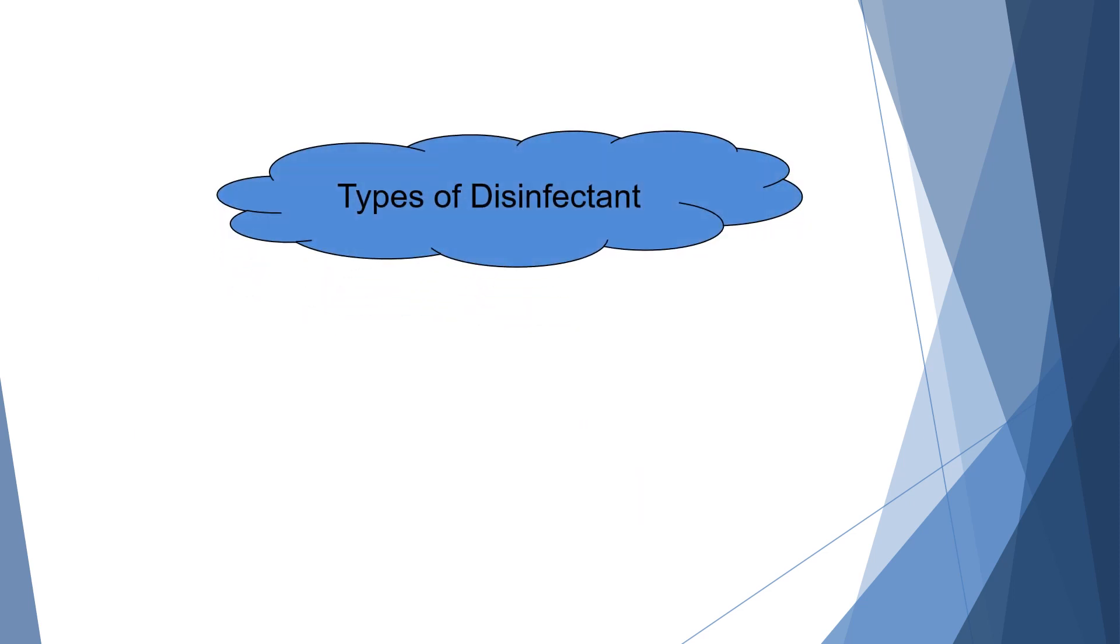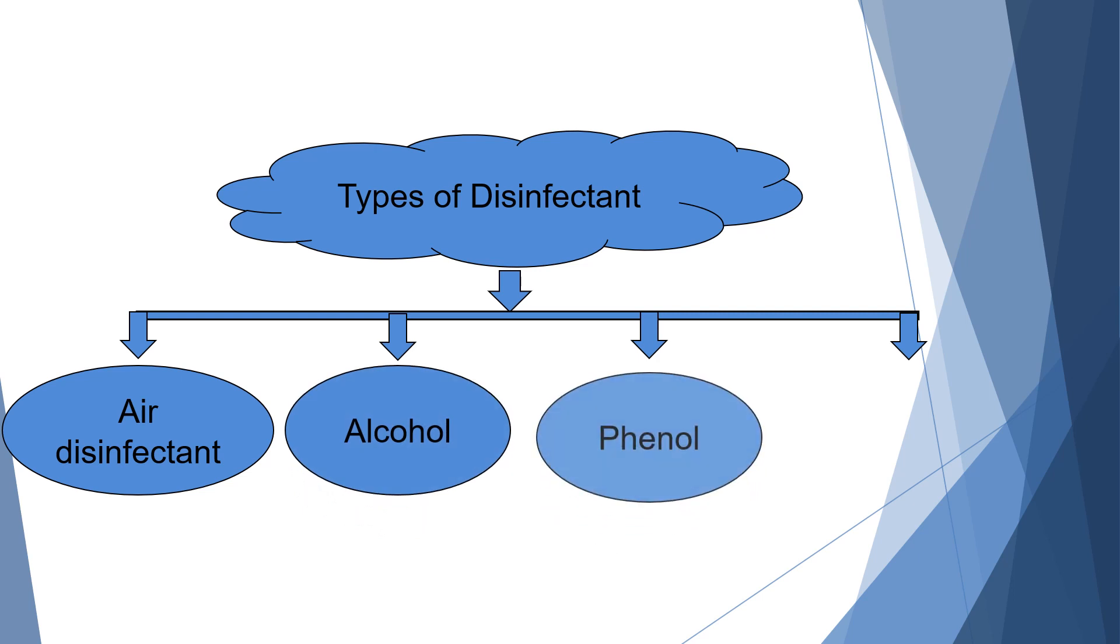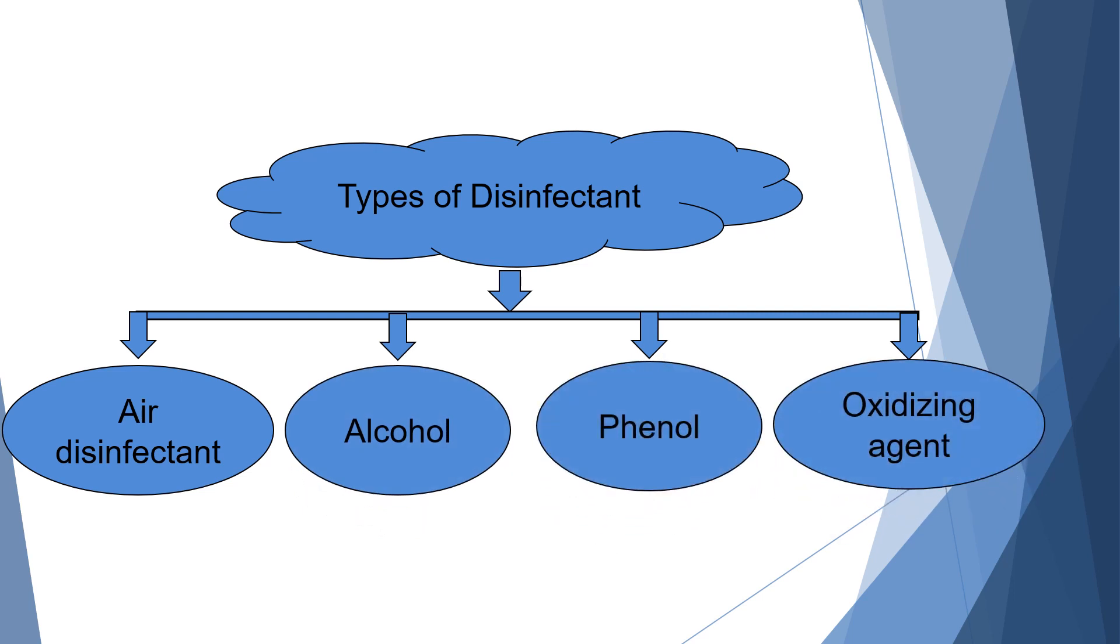Types of disinfectant: There are four types of disinfectant. First one is air disinfectant, alcohol, phenol and oxidizing agent. So let's see them one by one.